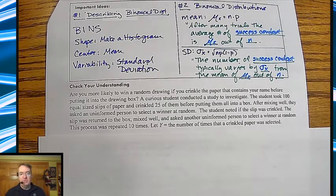pull out them to select a winner. The student noted if it was crinkled or not. Every time they put the crinkled paper back in the paper, mixed well, asked them to do it again. Each set was repeated. That was done 10 times. So you were, you have 10 pulls of it. So N is equal to 10.